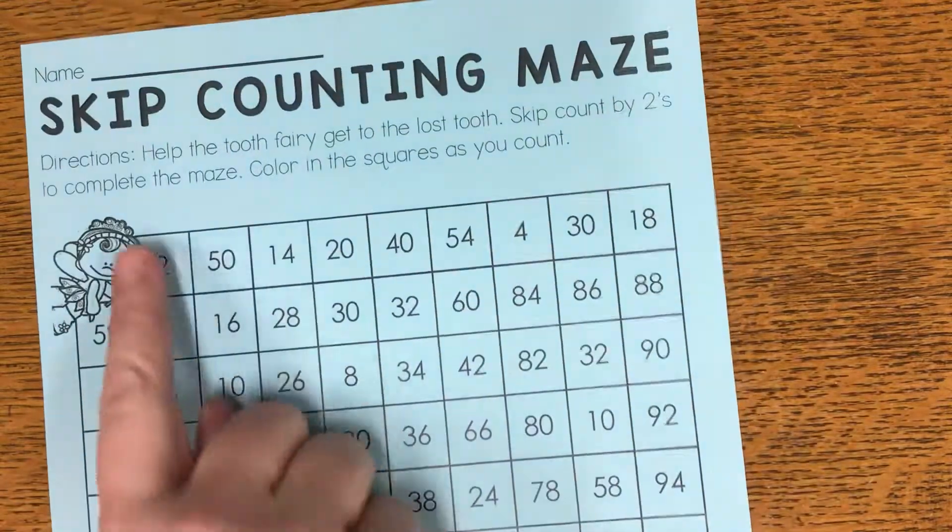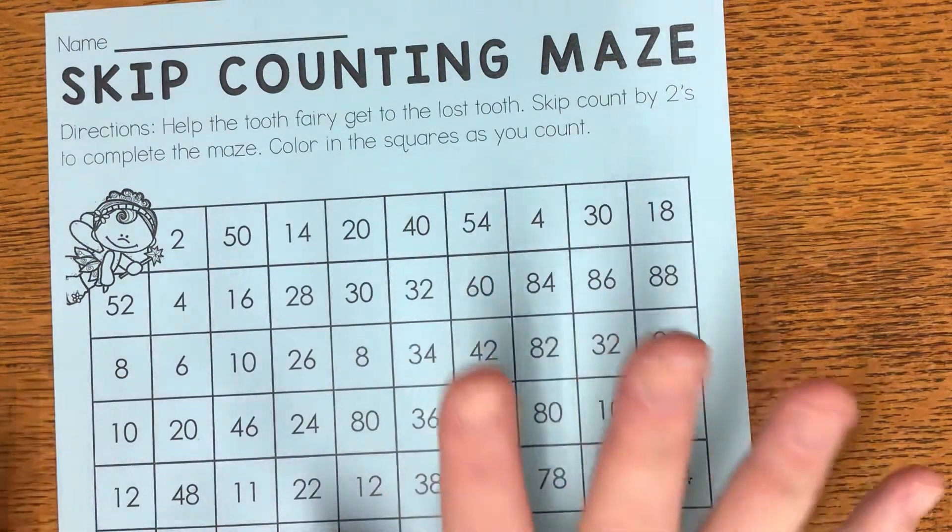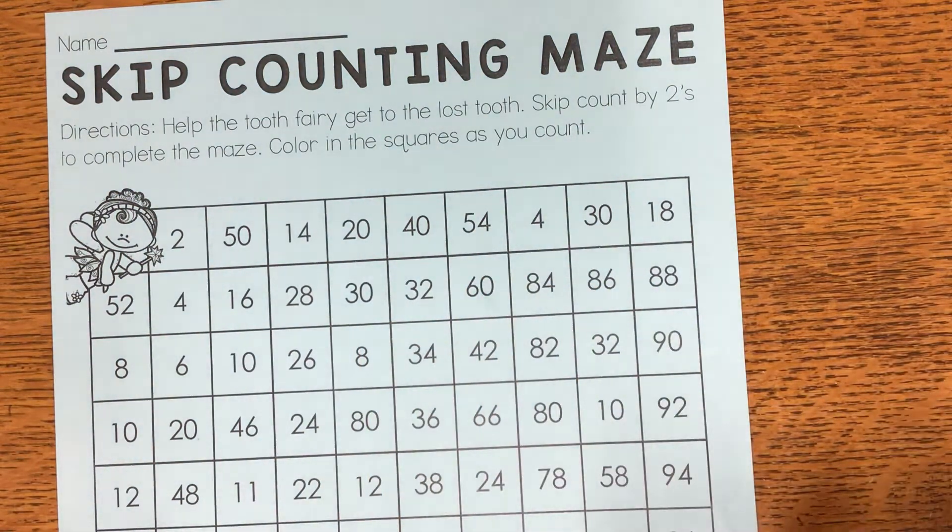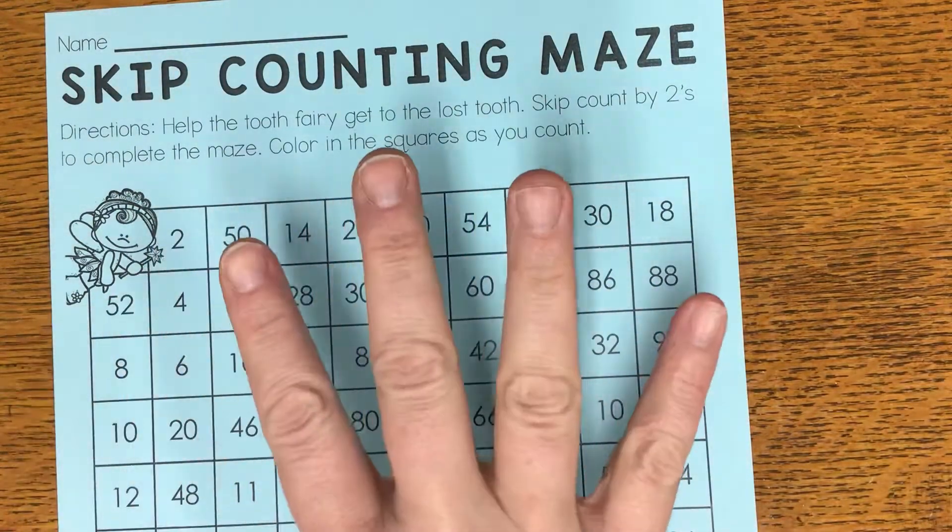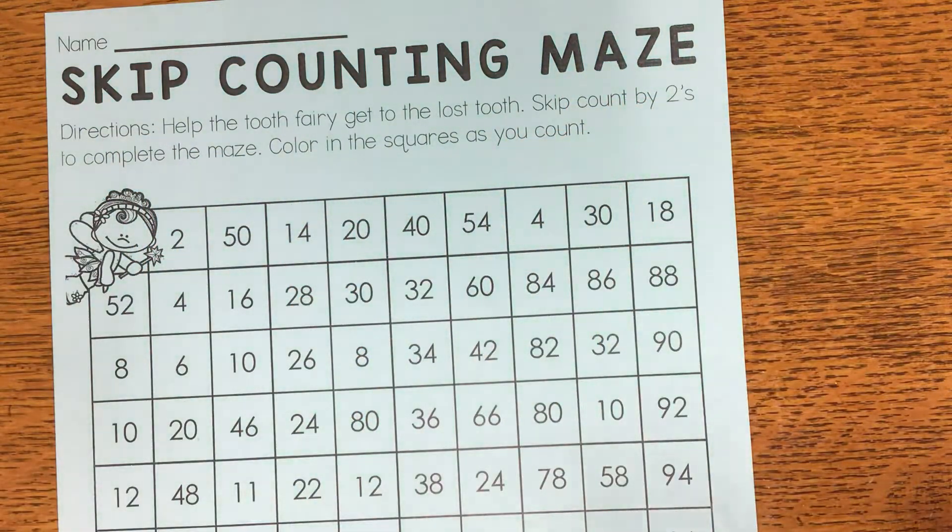Hi friends, this is called the skip counting maze and we're going to be counting by twos. So when you think of counting by twos, we go two, four, six, eight, ten, and continue on from there.